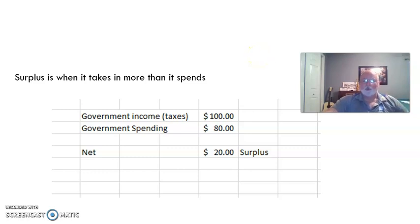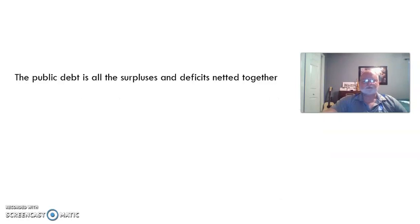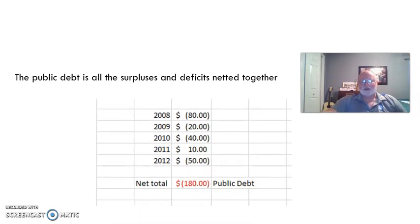What is the debt? It's all of these added together. And so you can just rough this down in your notes, copy it down really quickly. It doesn't have to be pretty. Let's say the country started in 2008 and ran an $80 deficit that first year. So there's four years with deficits and one with a surplus. All those netted together is $180 and that is the public debt. Remember, that is overall. Moving on to the next topic.